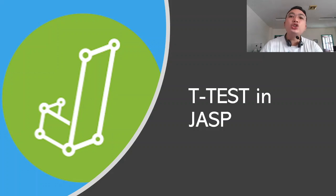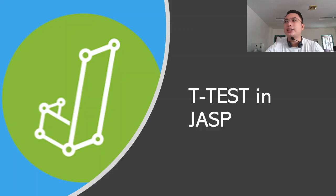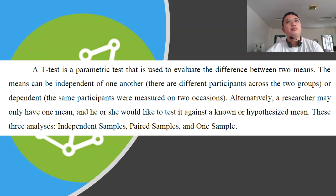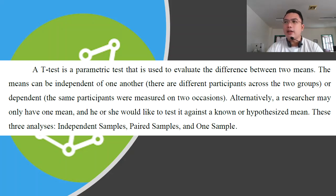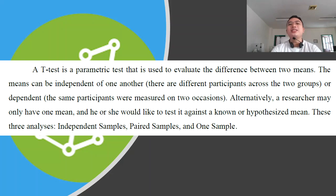By definition, a t-test is a type of inferential statistics wherein it is used to determine if there is a significant difference between the means of two groups which can be related in certain features. A researcher may only have one mean and would like to test it against a known or hypothesized mean. There are different types of t-tests: independent samples t-test, paired samples t-test, and one sample t-test.